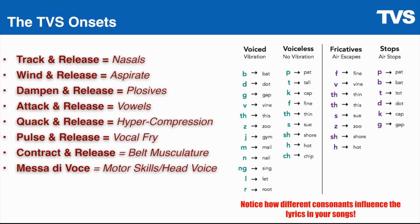If you look over here on the far right, you see how these consonants are starting — they're referencing individual words. Imagine each of those words is a lyric in your song. So if we have the dampen and release onset, which is any lyric that starts with a plosive, and we go to the right under voiced vibration, we see B for bat, D for dot, G for gap. The B, D, and G are all plosives; therefore they are all dampen and release onsets. If you train the dampen and release onsets, you get really good at plosives, which means any lyric that starts with a plosive, you'll sing better.